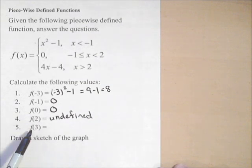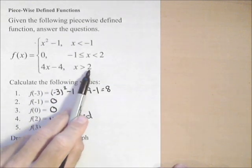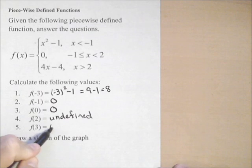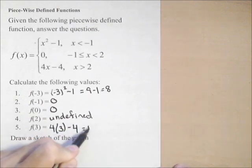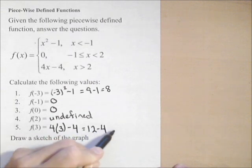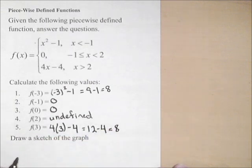And finally, f of three. Well, three is greater than two, so we're going to use this last piece. So four times three minus four equals twelve minus four, which is eight.